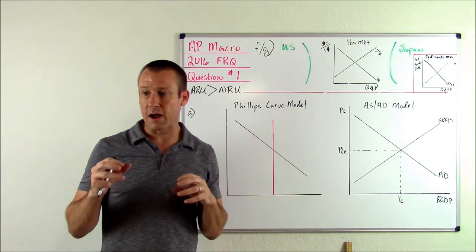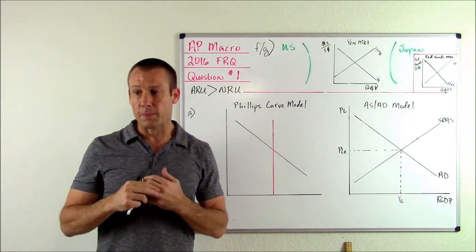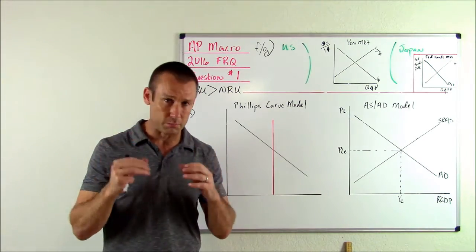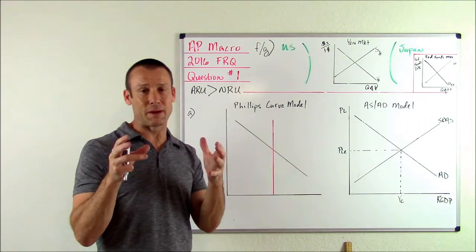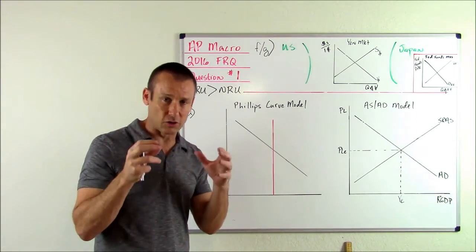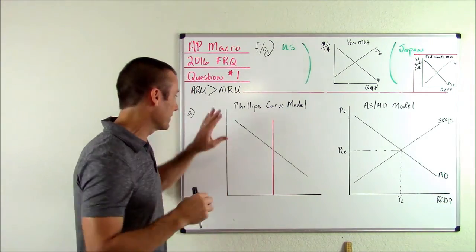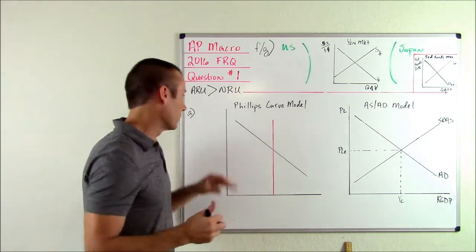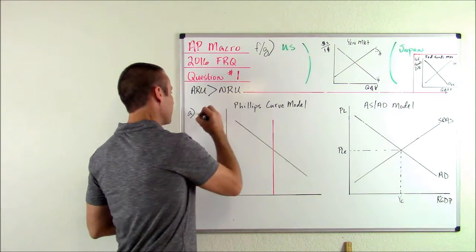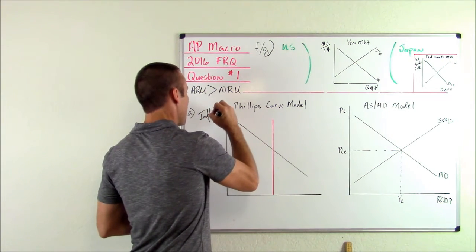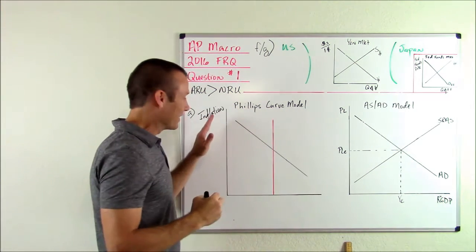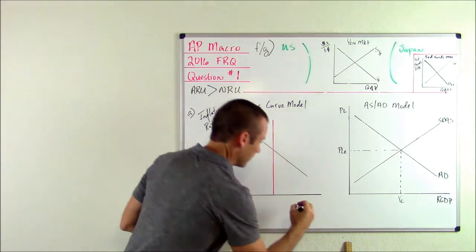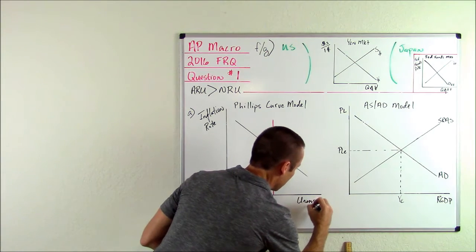Part A: draw a correctly labeled graph of both the long-run Phillips curve and the short-run Phillips curve, and label the current short-run equilibrium point B. The Phillips curve model shows the relationship between the inflation rate and the unemployment rate in both the short run and the long run. So let's get this labeled — the y-axis is the inflation rate, and the x-axis is the unemployment rate.